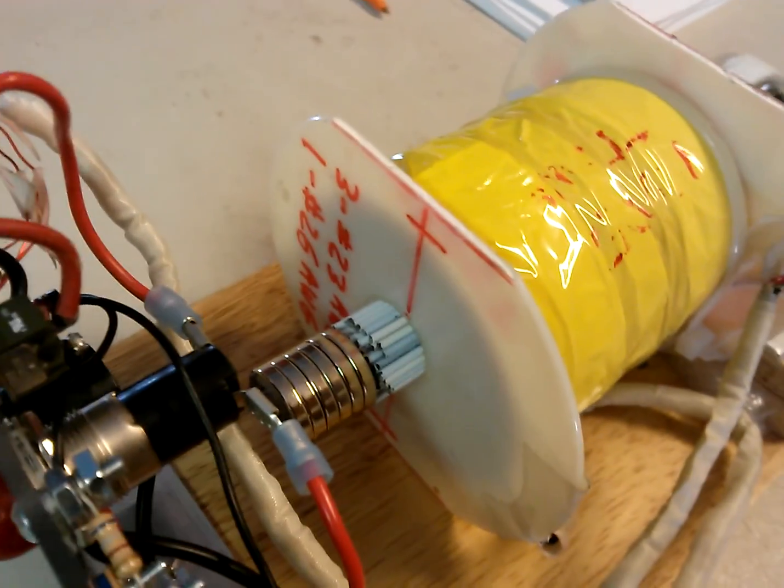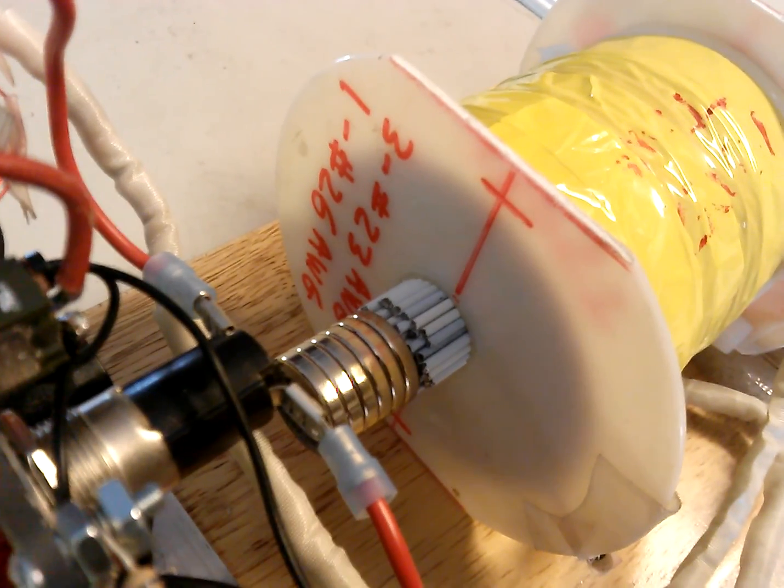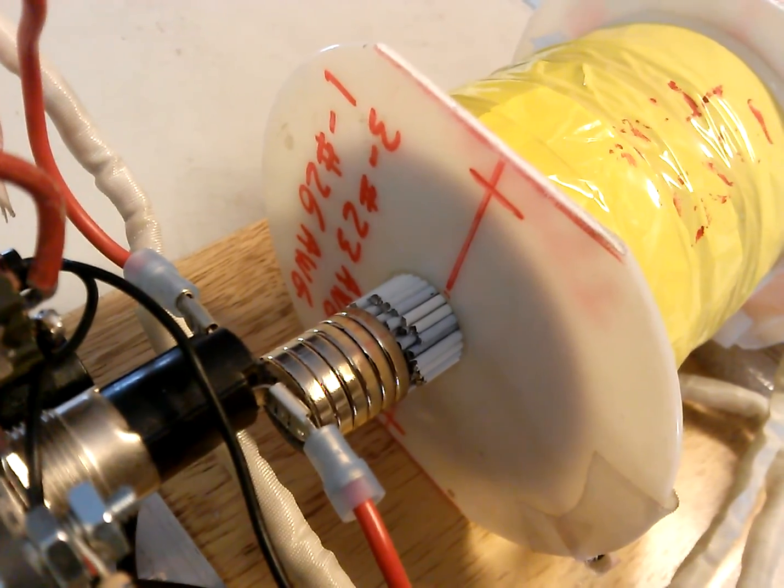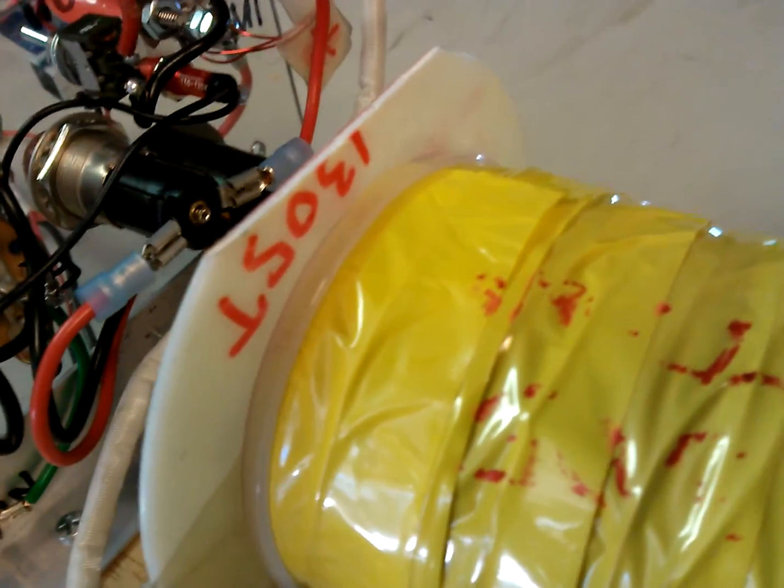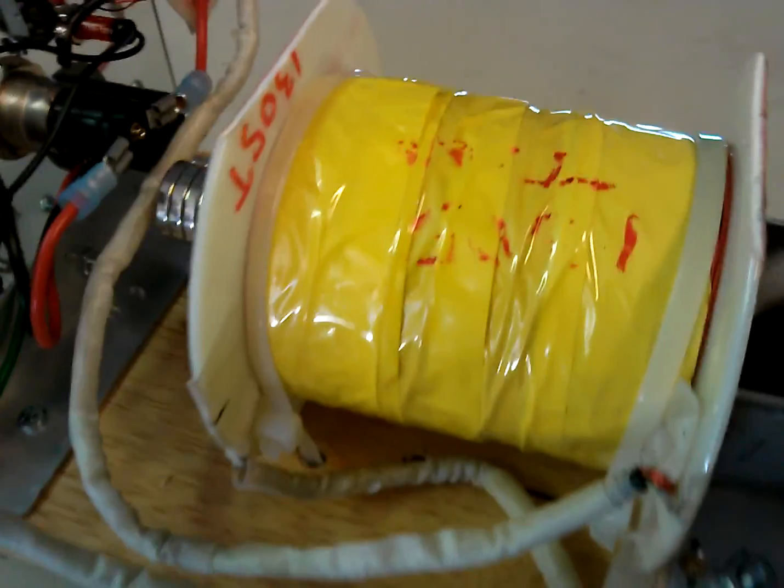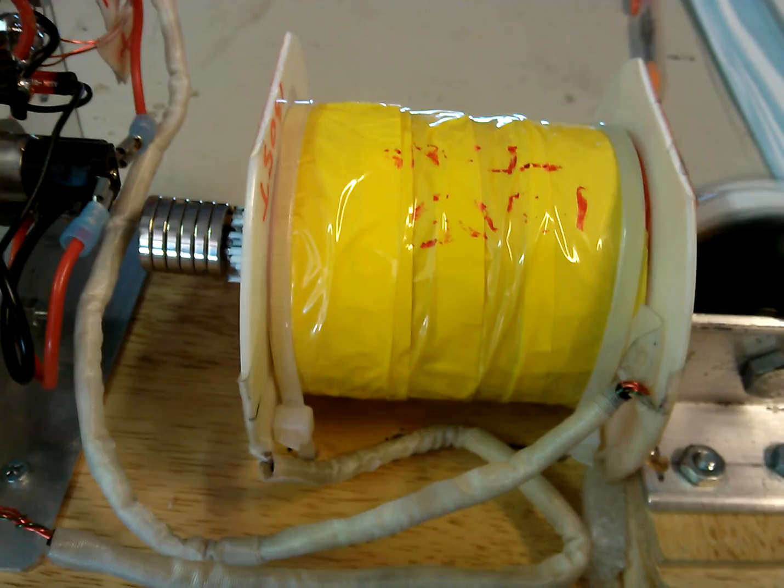And this coil - it's three number twenty-threes and one number twenty-six for the trigger. Let me see, that was 1,300, 1,305 turns. These were not twisted together, they were all just wrapped by filler, side by side.